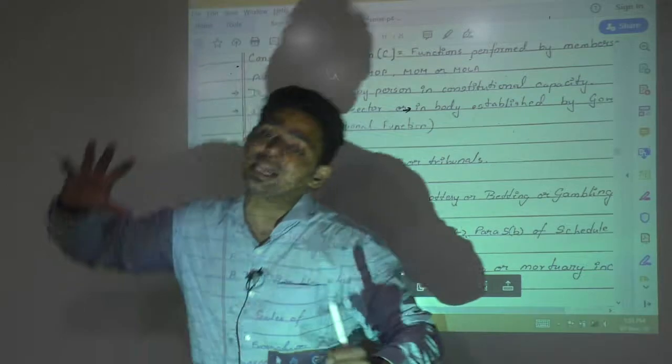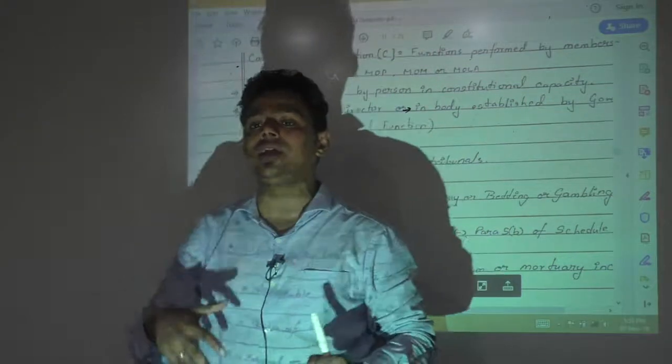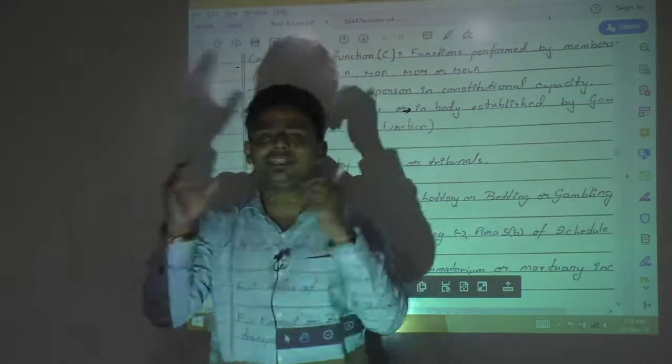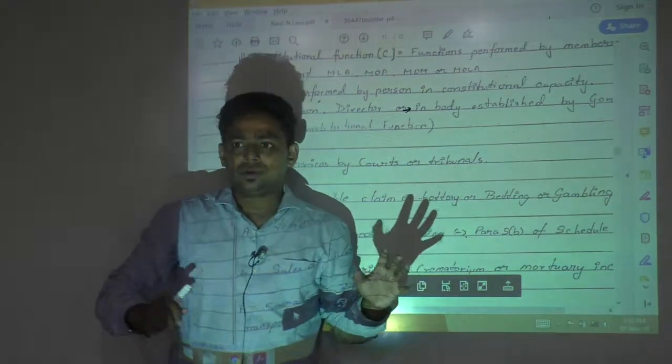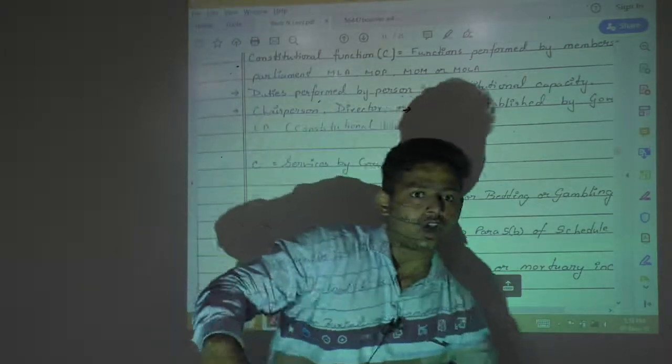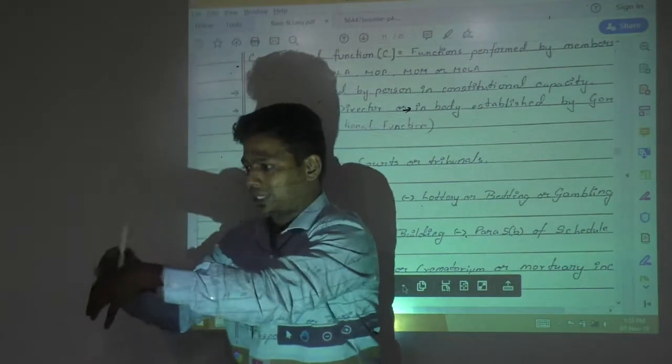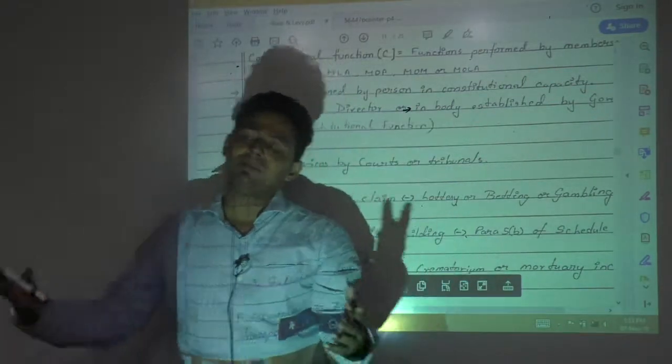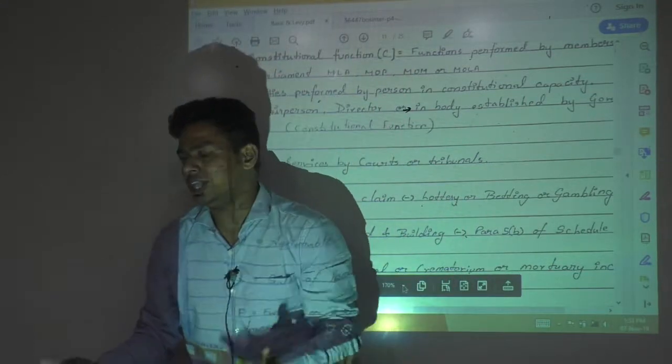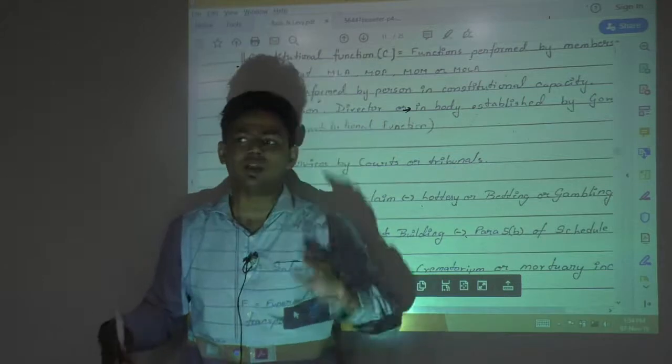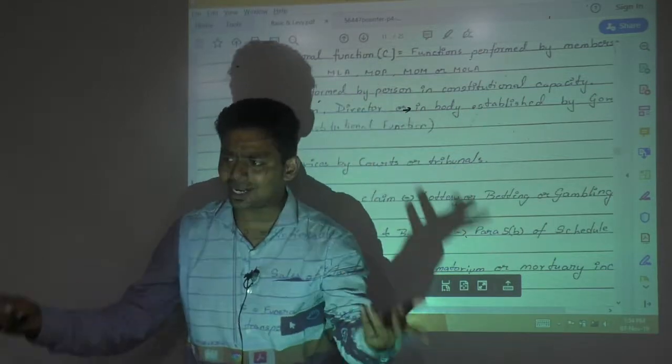Forcefully they made actionable claim as a goods. And now they are thinking that unnecessary we brought it into taxation. So let us put it into schedule 3. Are you getting this? So they included in the definition of goods to tax it. And then they are regretting it. Therefore they put it into schedule 3. Instead of this they could have simply said actionable claims are not goods, which is general definition of goods.